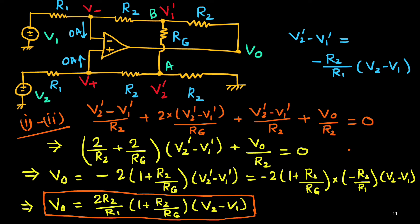Thus it is proven. Next video we will consider a different kind of circuit containing two op-amps for a variable gain difference amplifier.